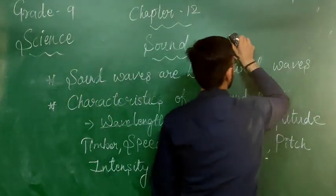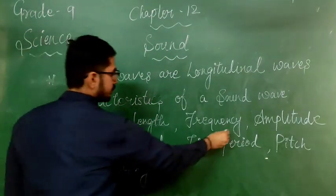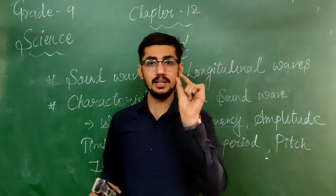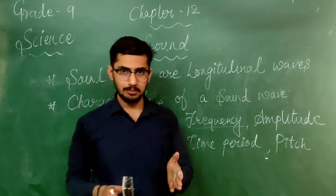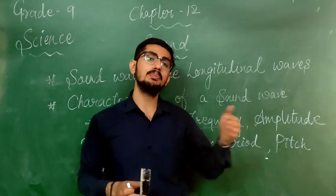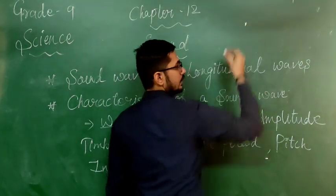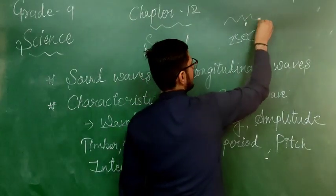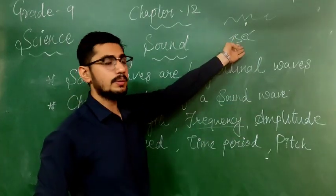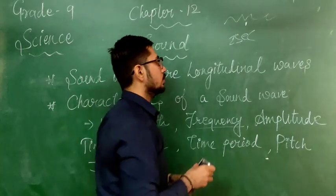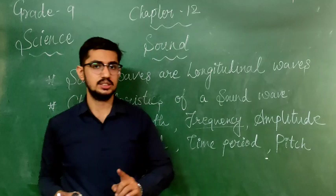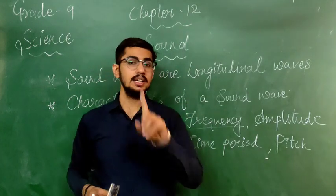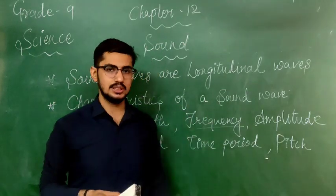The next characteristic is frequency. Frequency, in simple terms, is how many times a sound wave passes a particular point in a unit time — one second. For example, if a wave passes 30 times in one second, the frequency is 30. The unit of frequency is hertz, written as Hz (capital H, capital Z). So frequency is simply: how many waves pass a given point per unit time.